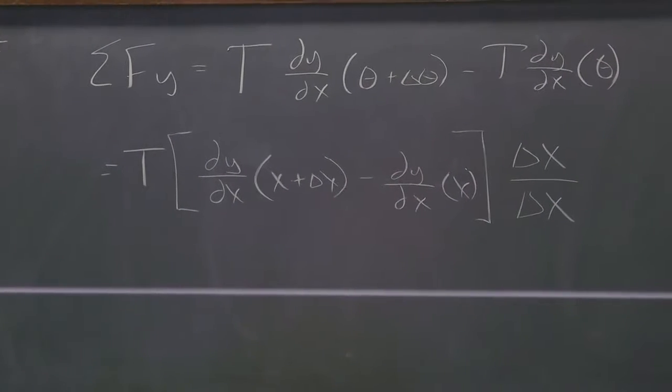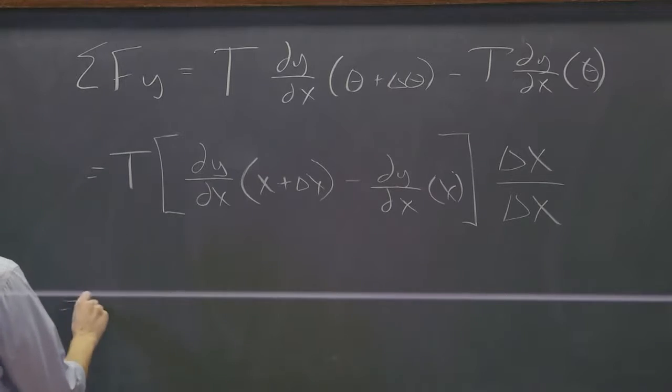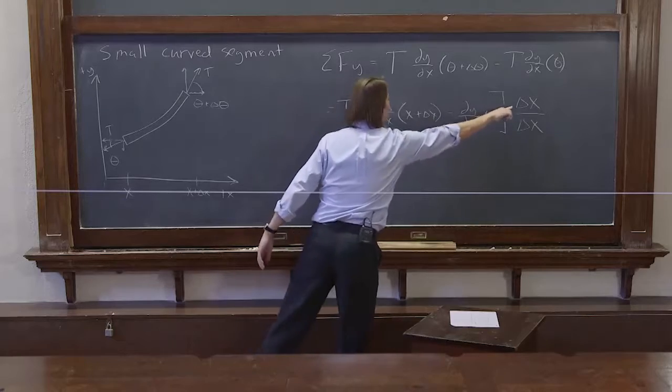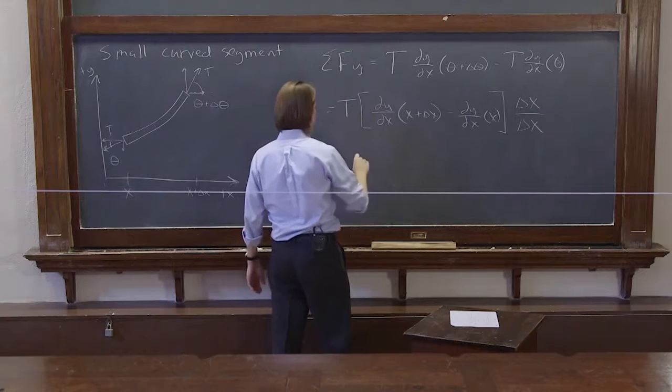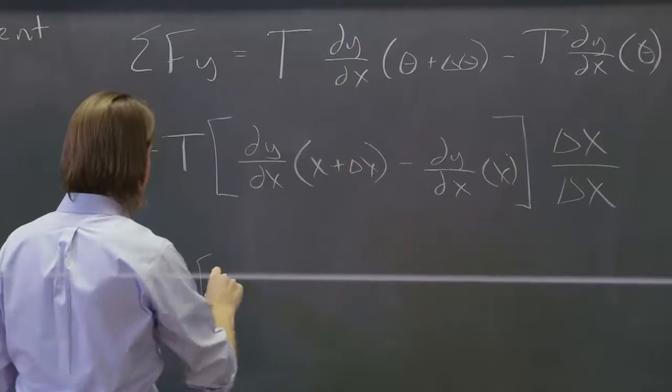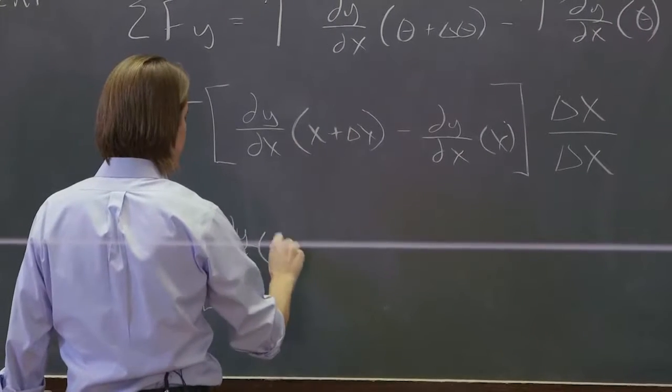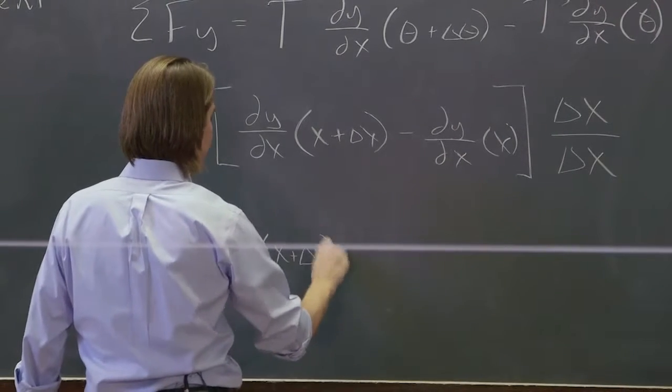So if we do that, then we have this equals the tension. And this delta x I'm going to keep here. The one in the numerator is just going to go here. And the one in the denominator is going to go in the bottom of the thing in parentheses.